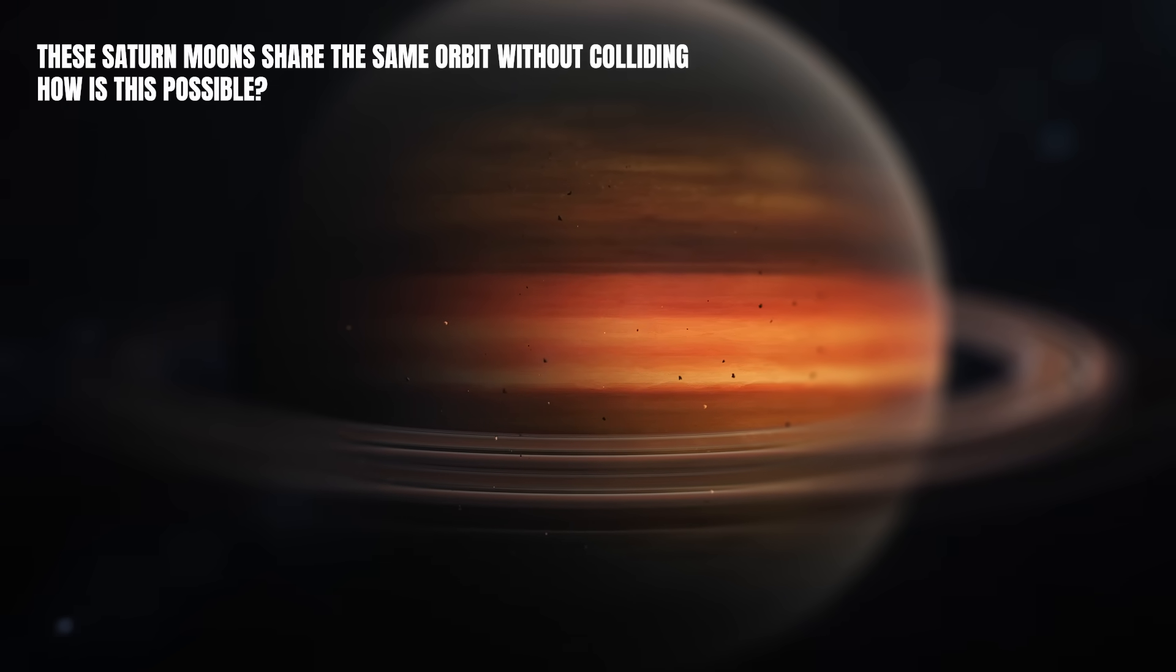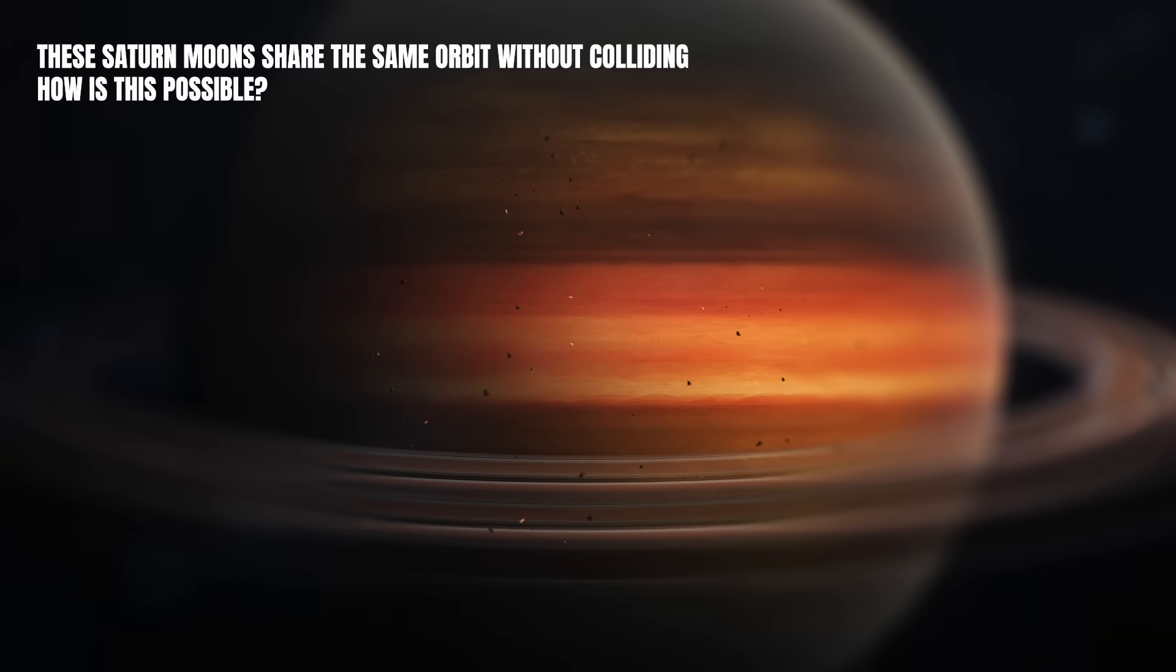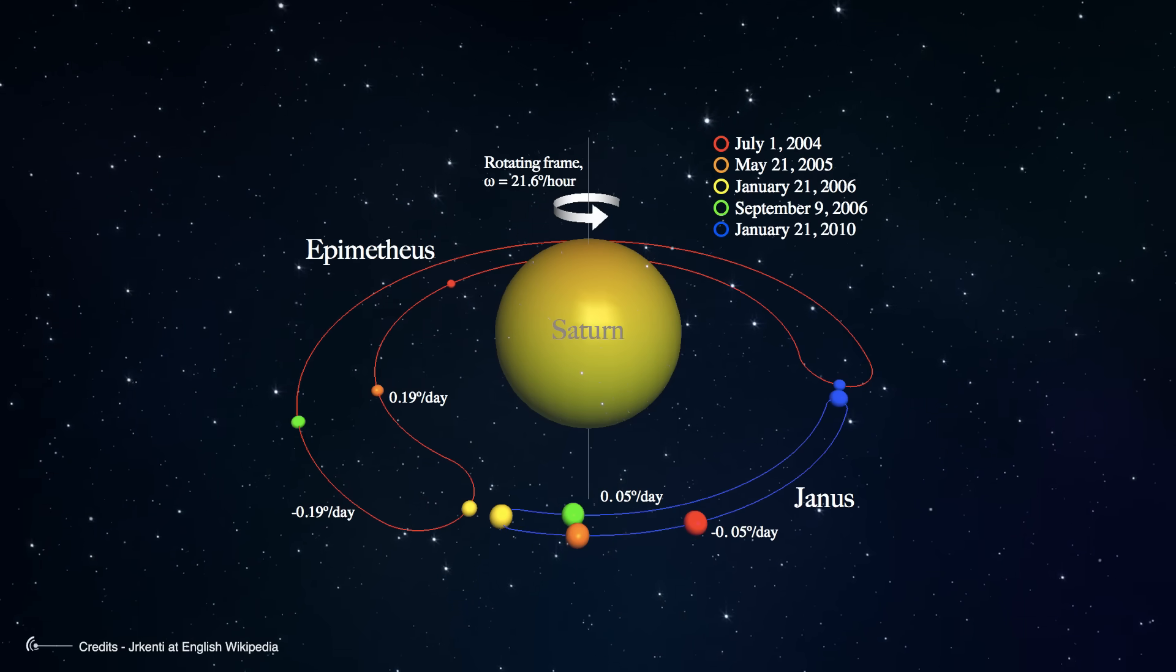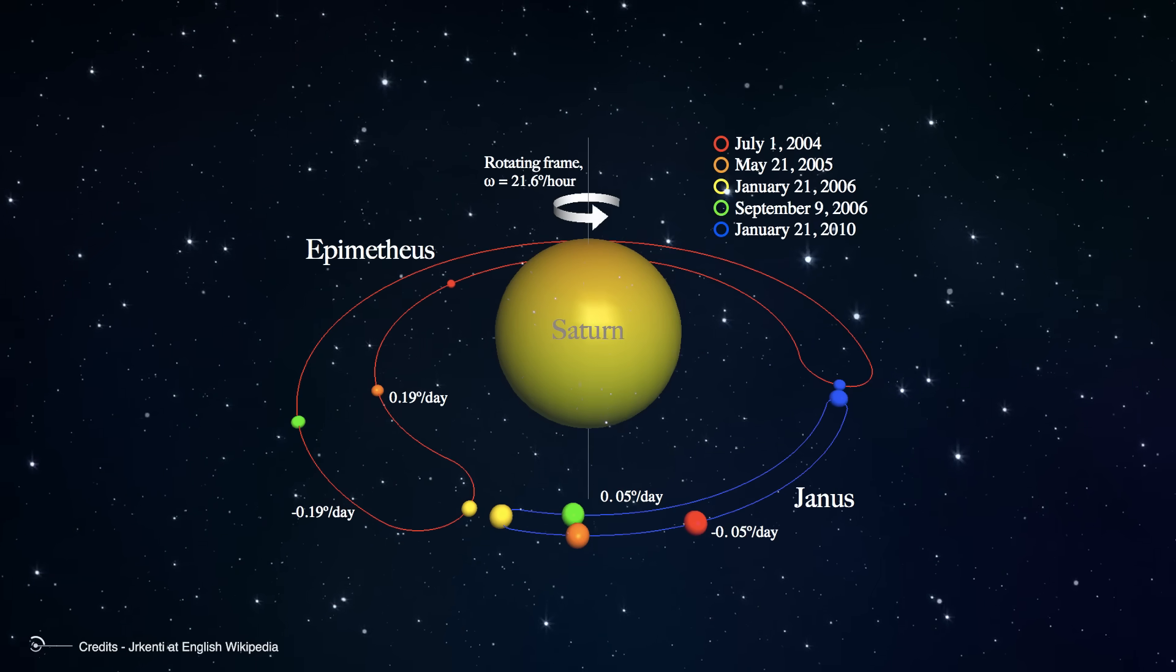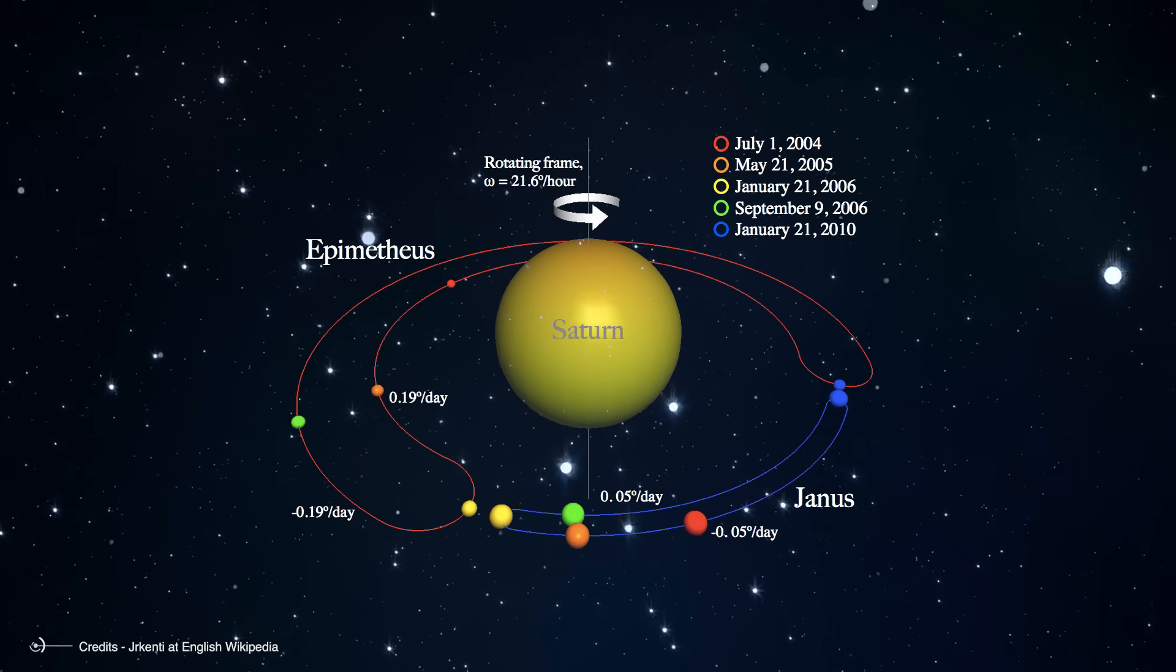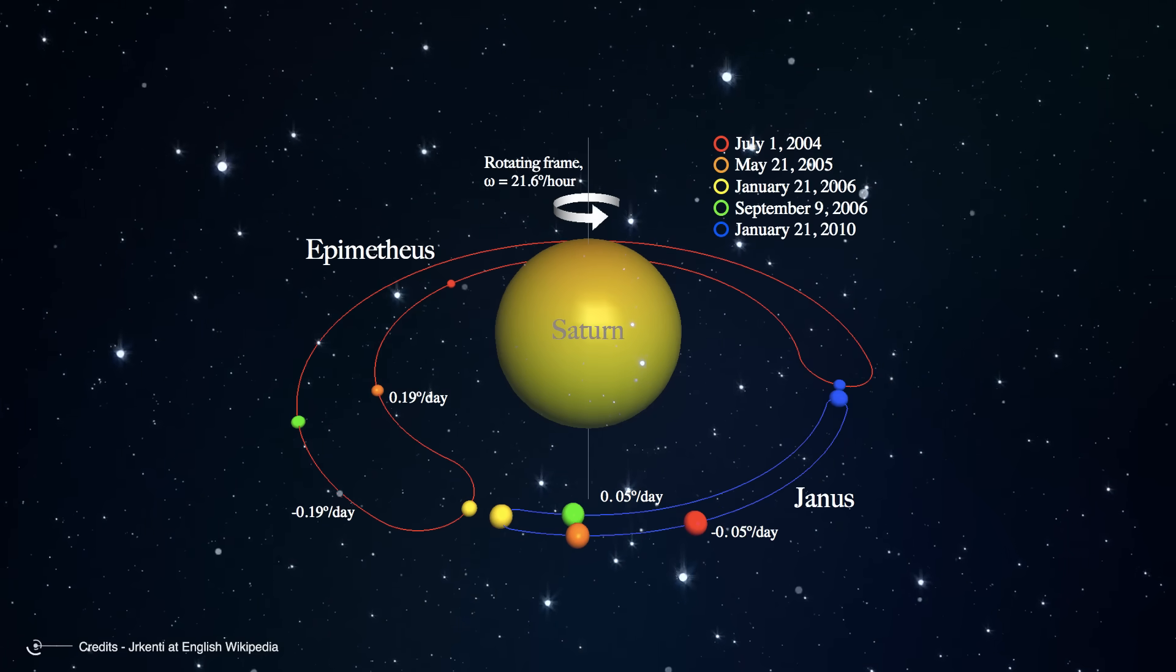These Saturn moons share the same orbit without colliding. How is this possible? They are Janus and Epimetheus, two co-orbital moons that perform an incredible dance around the ringed planet. This unique phenomenon in the solar system was confirmed in 1980 thanks to observations from the Voyager 1 mission.